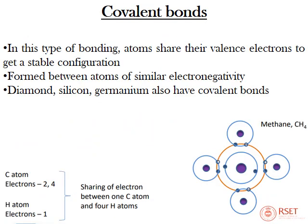Covalent bonding is also a stronger bond, but involves sharing of electrons rather than permanent transfer — sharing of valence electrons to achieve a stable configuration. For example, in methane (CH₄), carbon has four electrons in the outer shell and hydrogen has one electron, so four hydrogen atoms combine with one carbon atom, forming CH₄. It is formed between atoms of similar electronegativity. Examples include diamond, silicon, and germanium, which have covalent bonds — diamond being one of the hardest materials.